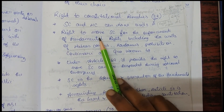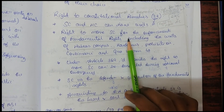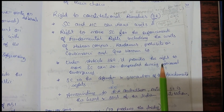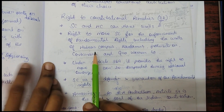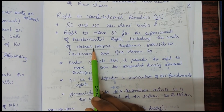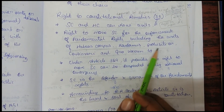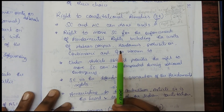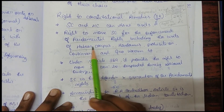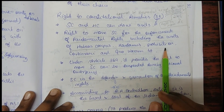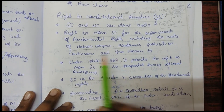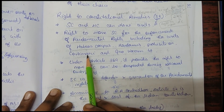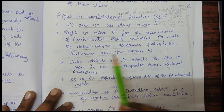The right to move the Supreme Court for enforcement of fundamental rights includes the issue of five types of writs: habeas corpus, mandamus, prohibition, certiorari (spelled C-E-R-T-I-O-R-A-R-I), and quo warranto.